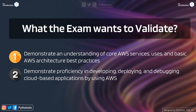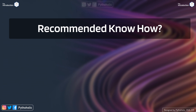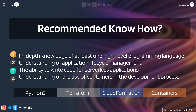For the exam there is a recommended know-how of things you need to know — both to clear the exam and to be better at development activities. The first requirement is in-depth knowledge of at least one high-level programming language. In this course we will be using Python, and even if you are a beginner, I'll explain things simply so you can understand how the code works. Next, you need an understanding of application lifecycle management — how you plan, develop with best practices, test, deploy, and maintain the application.